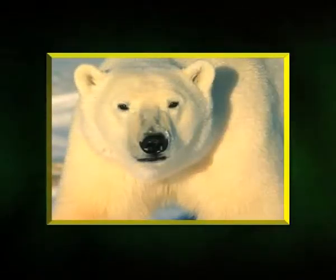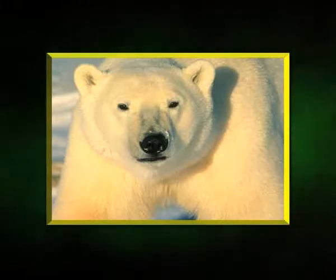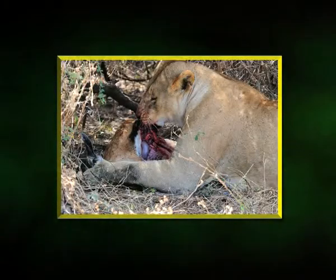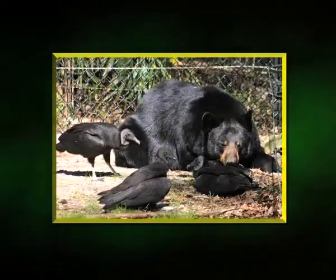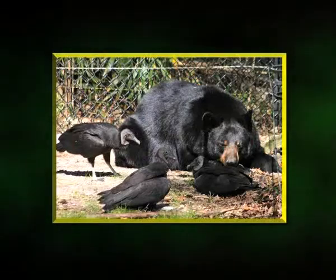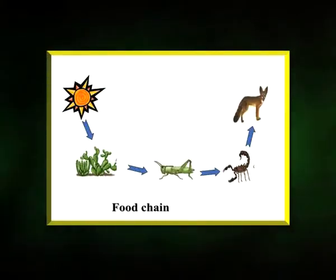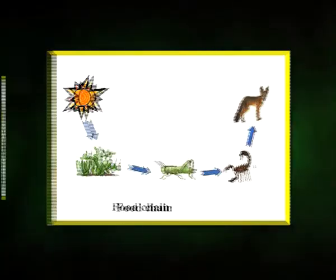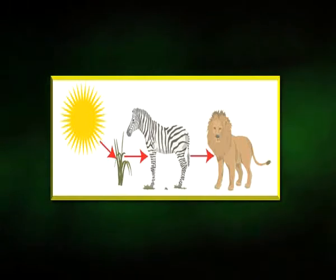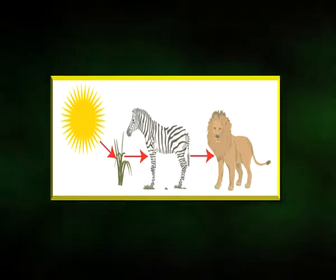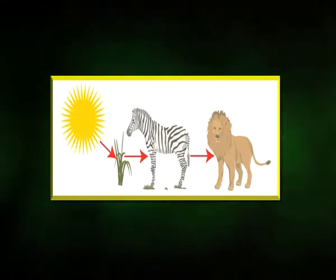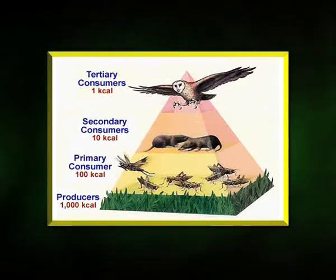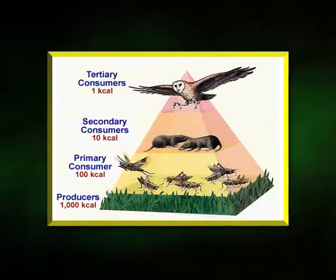Consumers that eat producers and other consumers are called omnivores. Consumers that hunt and kill other consumers are called predators. Consumers that eat other dead consumers are called scavengers. The transfer of energy from the sun to producers to primary consumers and then to higher-order consumers can be shown in a food chain. Each successive level of nourishment in a food chain is known as the trophic level. On average, about 10% of net energy production at one trophic level is passed on to the next level.